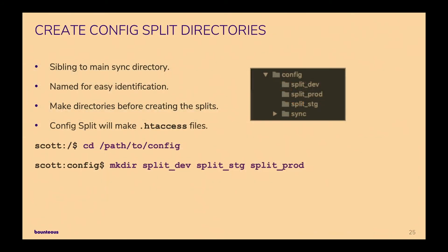Next is creating those split directories — just a mkdir command will do that. I recommend making them easily identifiable by name, and the Config Split maintainers recommend putting those as a sibling directory to your main config sync directory. In this case, I have it outside of the docroot at the repo root. Note: Config Split module will not create the directory — it'll bark at you if it doesn't find it. When it does the first export it will create the .htaccess file that blocks random browsing into that directory.